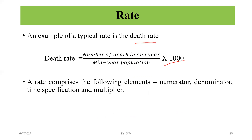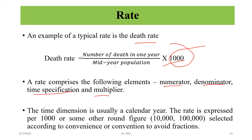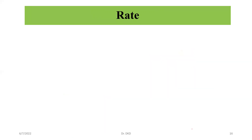A rate comprises the following elements: we require a numerator, a denominator, time specification, and a multiplier such as 1000. The time dimension is usually a calendar year, and the rate is expressed per 1000 or some other round figure — 10,000 or 100,000 — selected according to convenience or convention to avoid fractions.